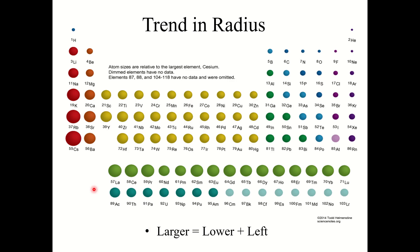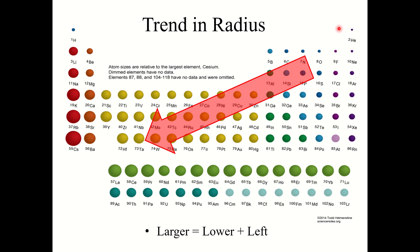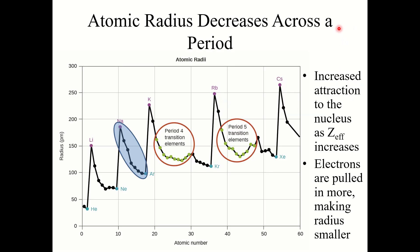We care about effective nuclear charge because it explains the trend in atomic radius. The largest atoms are towards the bottom left of the periodic table. As you go down a column, atomic radius gets larger, and going right to left across a period, atomic radius gets larger. The smallest atoms are in the top right. So atomic radius decreases going left to right across a period.